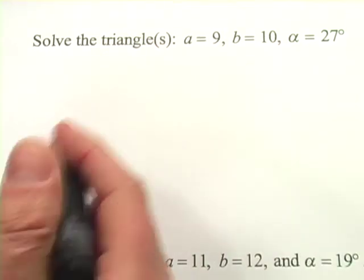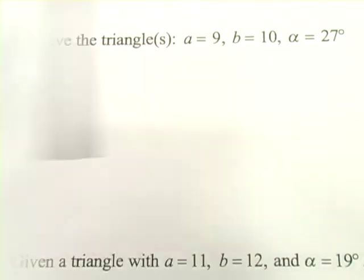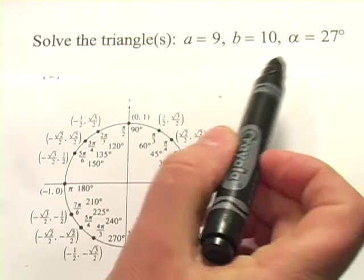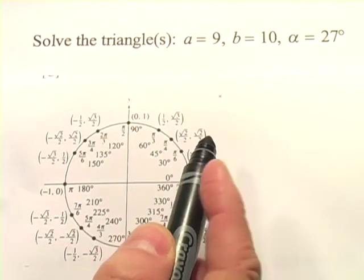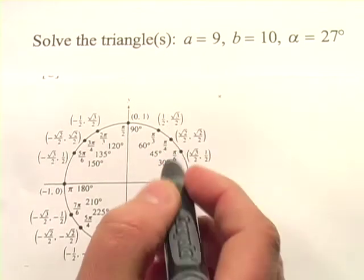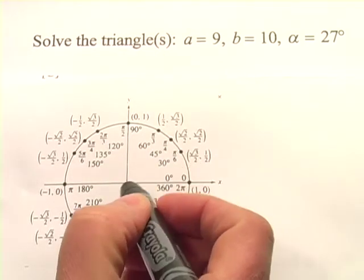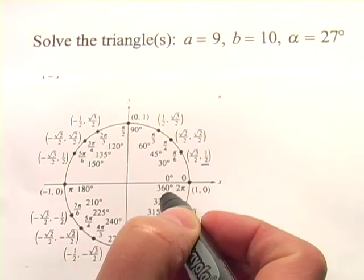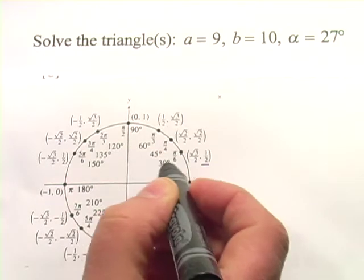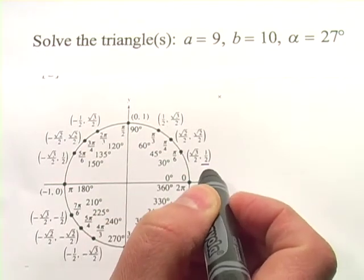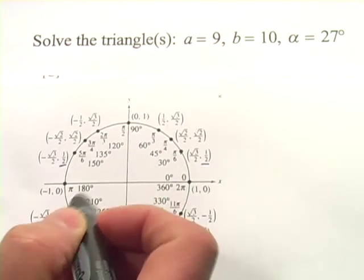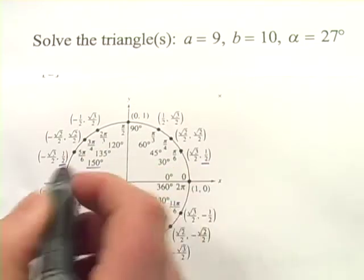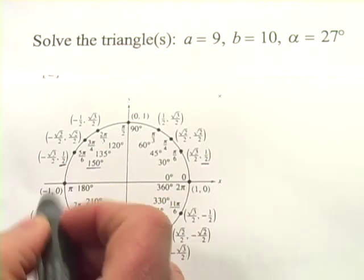Another way to think about this is that the sine—let me bring out the unit circle here. To solve this using the law of sines, we would have to take the sine of something at some point. And what you'll see in the first quadrant, so here's 30 degrees, the sine of that is 1/2. But there's another value of degrees where the sine is a positive 1/2, and that's over here in the second quadrant. So this angle, 150, also is a solution to sine of 1/2.